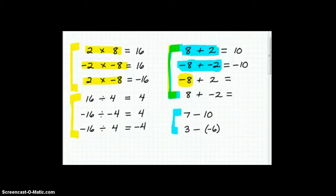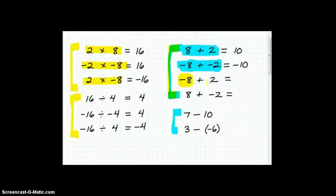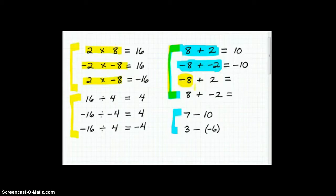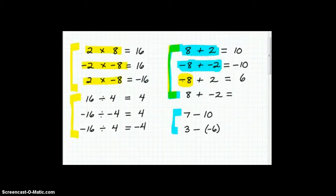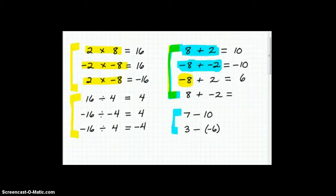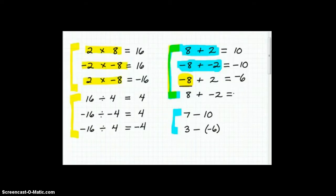So here's what you do. Anytime you have two different signs, you're going to end up subtracting. So let's actually do that now, 8 and 2, if I took the difference, I'm going to get 6. Just kind of forget about that negative sign for a second. But now, the sign that is associated with the answer is going to be associated with that largest number, i.e. the 8. So this is going to be a negative 6. Does that make sense?